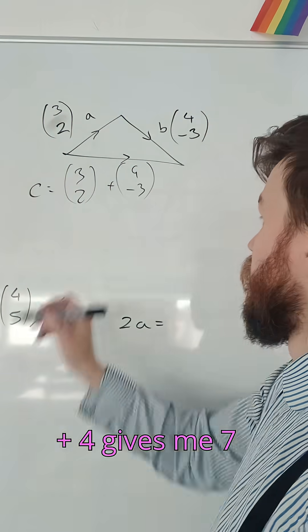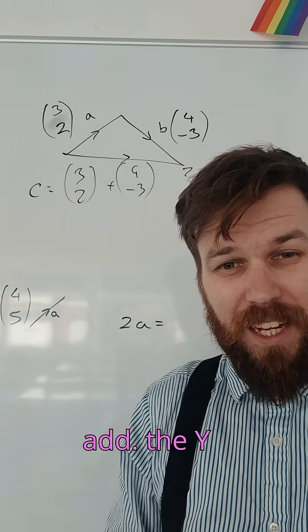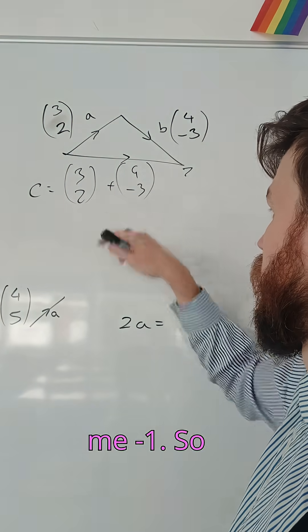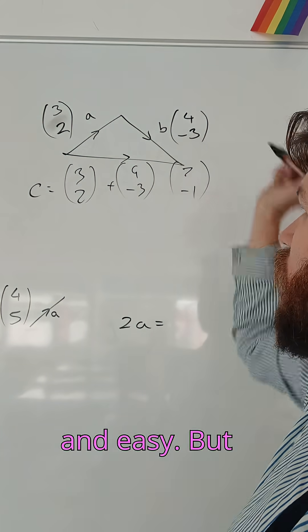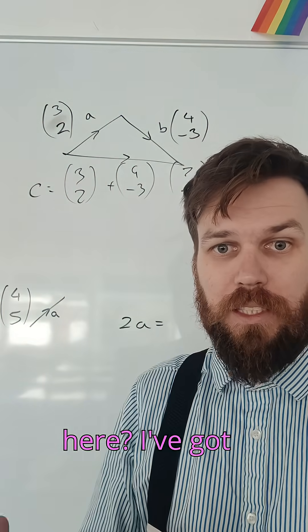Add the x direction: three plus four gives me seven. Add the y direction: two add negative three gives me negative one. Ultimately it would move seven along and one down from its starting point. Nice and easy.